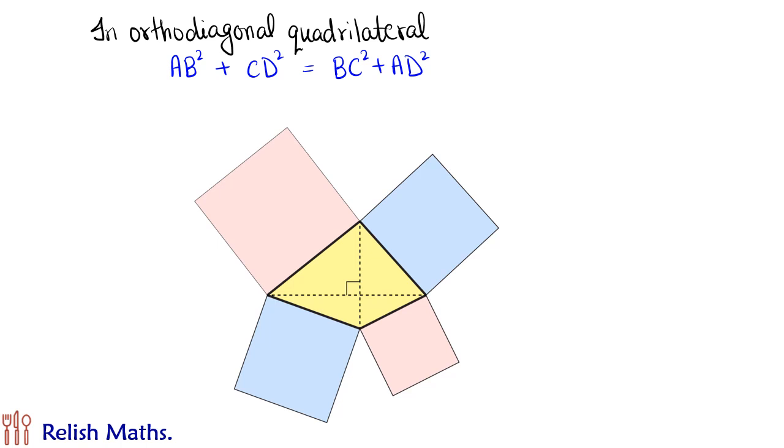In this picture the yellow quadrilateral is our orthodiagonal quadrilateral and we have made squares on the sides of the quadrilateral. If we take the sides as a, b, c, d and the areas as a², b², c², d², we will find that the area of pink squares equals the area of blue squares, or a² + c² = b² + d².